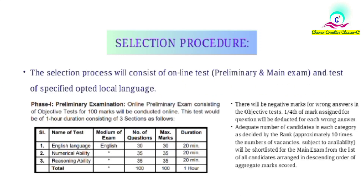Next is the selection procedure. This exam has two parts: prelims and mains. Prelims has three subjects — English Language (30 marks), Numerical Ability (35 marks), and Reasoning Ability (35 marks) — totaling 100 marks in one hour, with 20 minutes per section. For selection in prelims, candidates equal to 10 times the number of posts will be selected. There is one-fourth negative marking for each wrong answer.